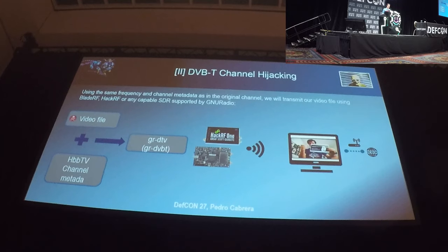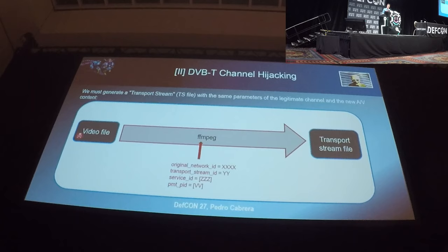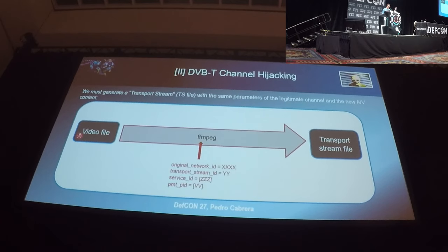Once we forge a valid transport stream, we will broadcast it with the gr-dtv utility. To generate the poison transport stream, we can use a simple FFMPEG command — take any video file with any codec, output it as a transport stream, and set all parameters: network ID, stream ID, service ID, and so on. We need to use exactly the same parameters as the valid channel we want to impersonate. Alternatively, we can use OpenCaster — a more complex Python script — which we'll need for the URL injection attack.